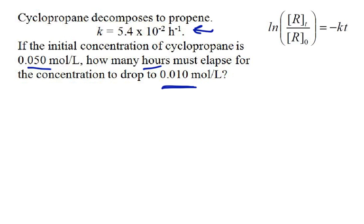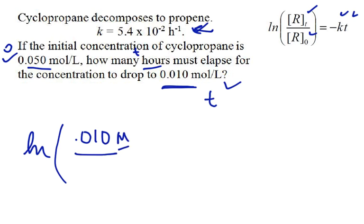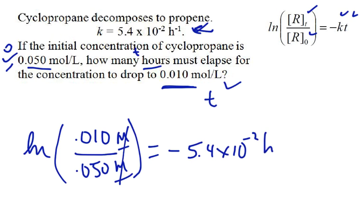We can see what we have here is we have 4 different variables in this equation. And we were given the constant, the K. And we were given the initial concentration. We're given the final concentration. This is the concentration at time 0 over here. This is the concentration at time T. And what we're looking for is T. So we just kind of set this up. The natural log, concentration at time T, 0.010 moles per liter, divided by the concentration at time 0, that's 0.050 moles per liter. So you can see that unit cancels out. It's equal to negative K. Now we have that, that's 5.4 times 10 to the negative 2 hours to the minus 1, times T, which is what we're trying to get.